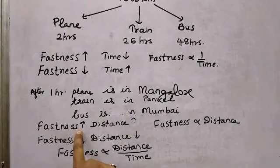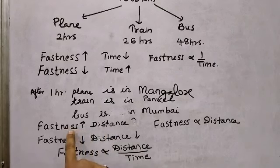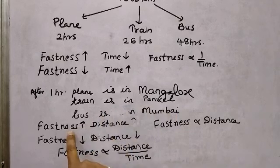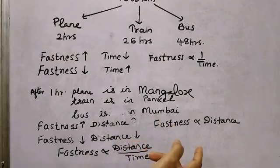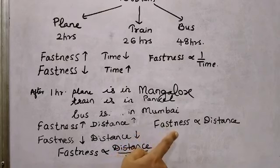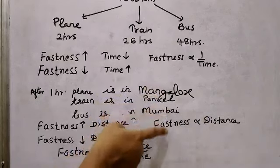If fastness increases, the distance travelled is also more. The plane is faster so it has travelled further — it is almost in Karnataka. Fastness increases, distance also increases. If fastness decreases, as with the bus, the distance decreases — the bus is still in Mumbai. Fastness is more, distance is more; fastness is less, distance is less. This is direct variation, so fastness is directly proportional to distance.